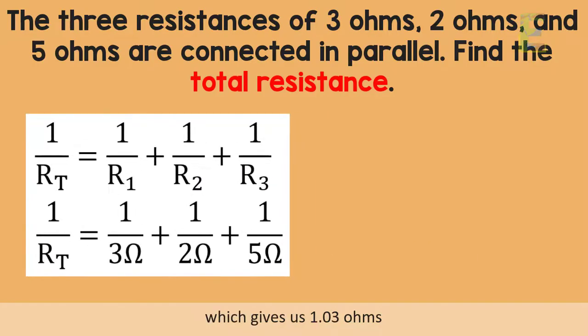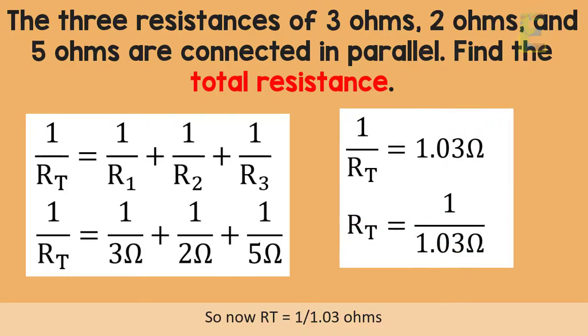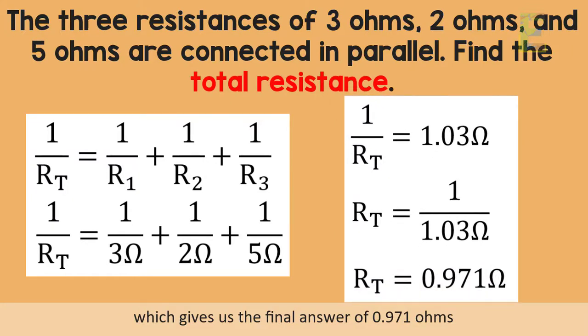Which gives us 1.03 ohms. So now, RT is equal to 1 over 1.03 ohms, which gives us the final answer of 0.971 ohms.